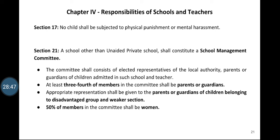Another landmark provision comes under Section 21. It says that a school other than unaided private schools shall constitute a School Management Committee. The committee shall consist of elected representatives of the local authority, parents or guardians of the children admitted in the school, and teachers. At least three-fourths of members in the committee shall be parents or guardians, with appropriate representation given to parents or guardians of children belonging to disadvantaged or weaker sections. Fifty percent of members in the committee shall be women.